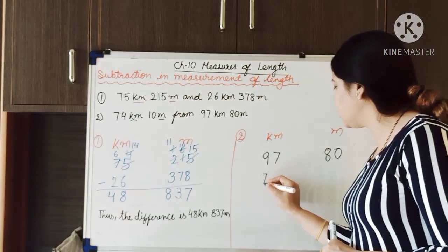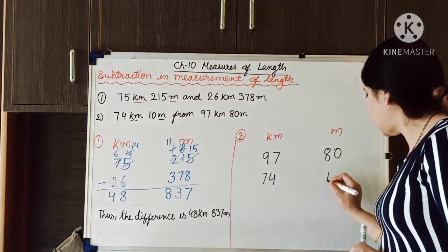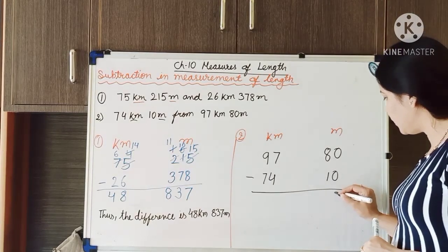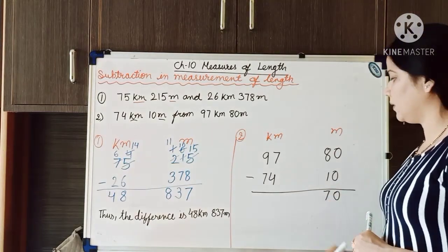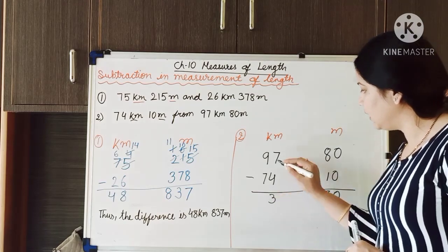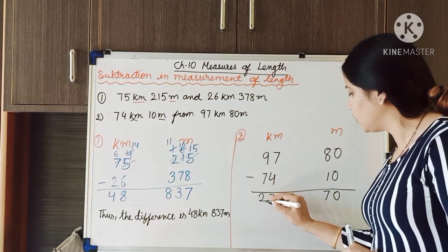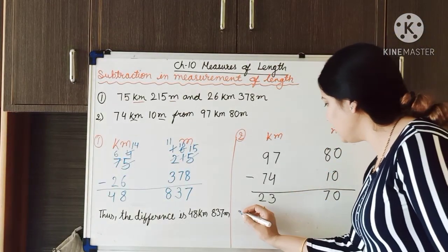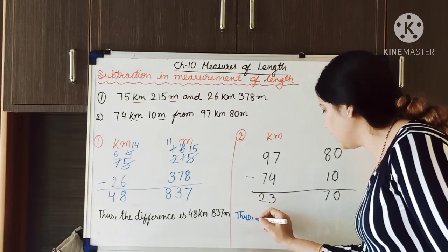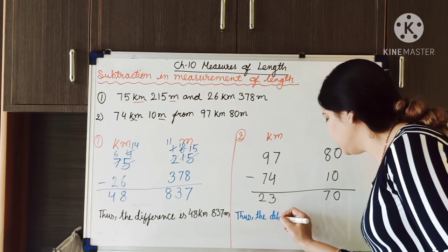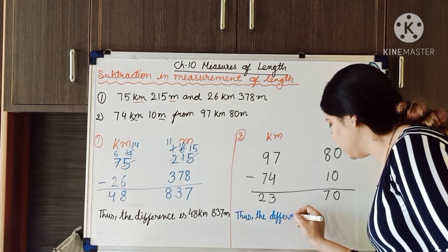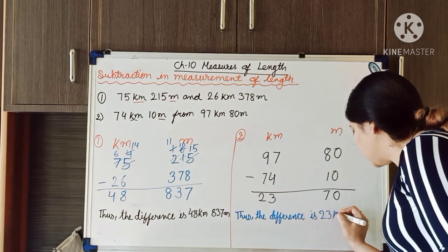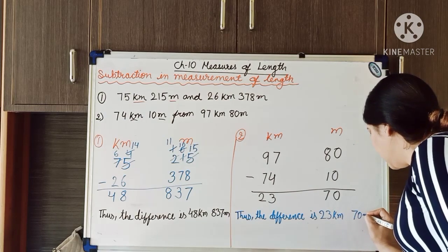Then we write 74 kilometer and 10 meter below it. Now we subtract: 0 minus 0 is 0; 8 minus 1 is 7; 7 minus 4 is 3; 9 minus 7 is 2. Now we write the final statement: thus the difference is 23 kilometer and 70 meter.